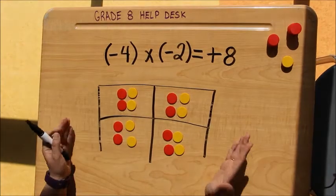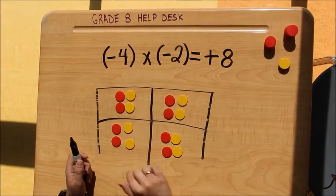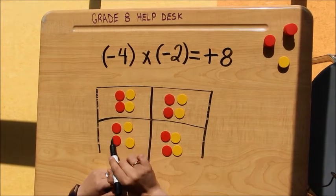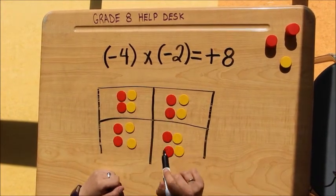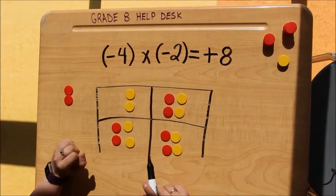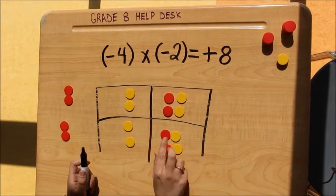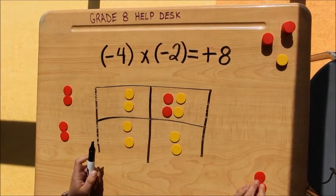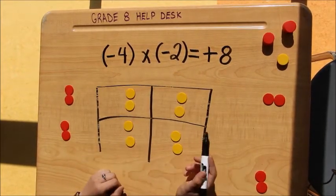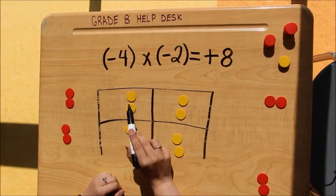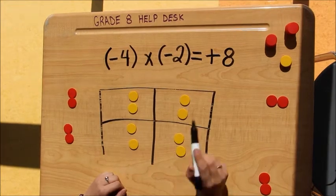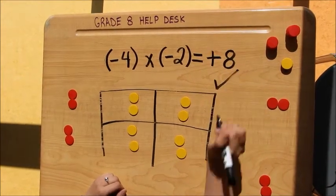Now I still have nothing in my bank because all of these cancel each other out to make 0. From here I can now take out my 2 negative tiles from each group — group 1, group 2, group 3, and group 4, the tiles are gone. What is left in my bank is my answer: 1, 2, 3, 4, 5, 6, 7, 8 positive tiles. So this answer is correct.